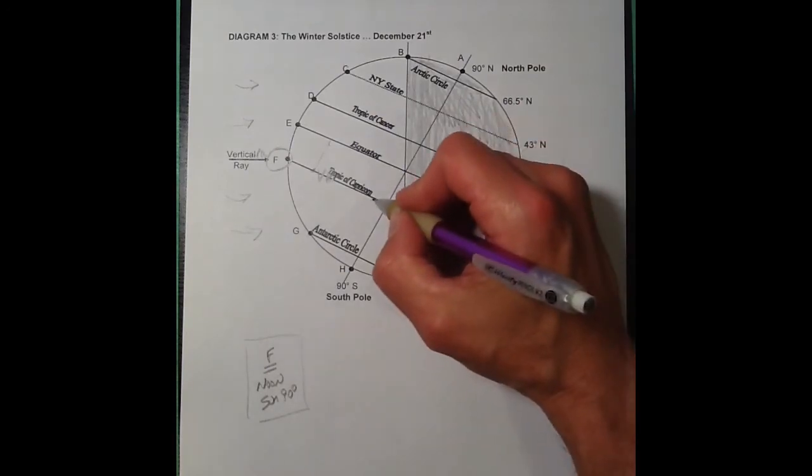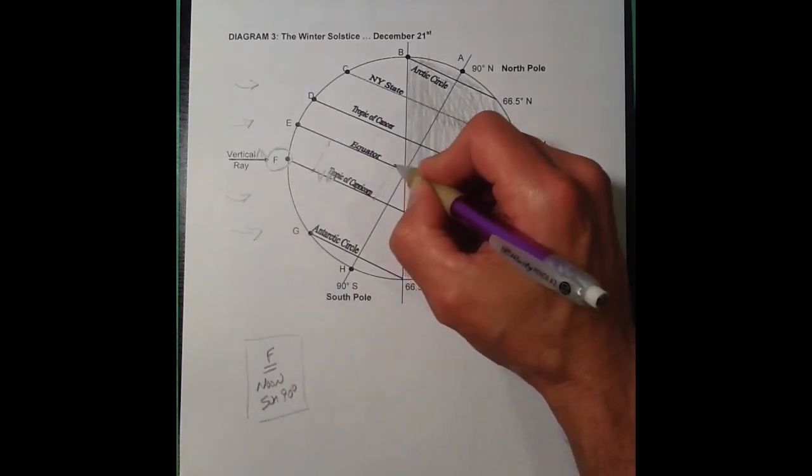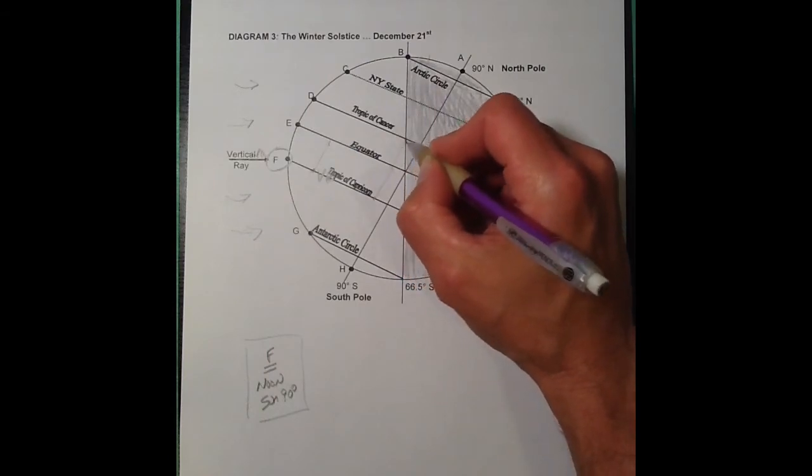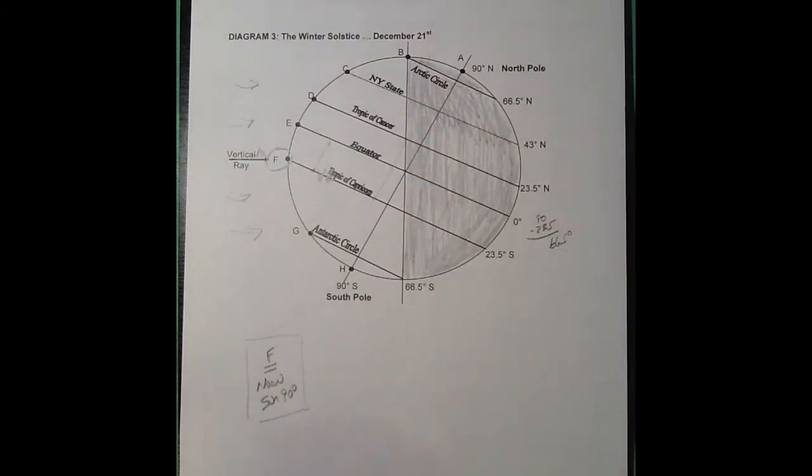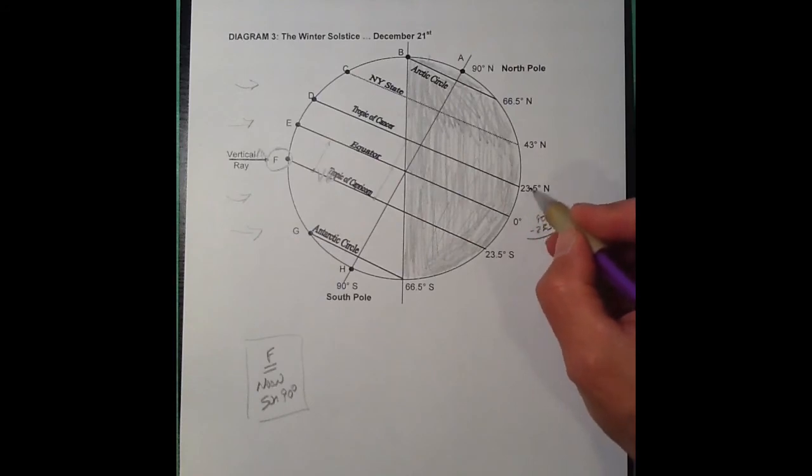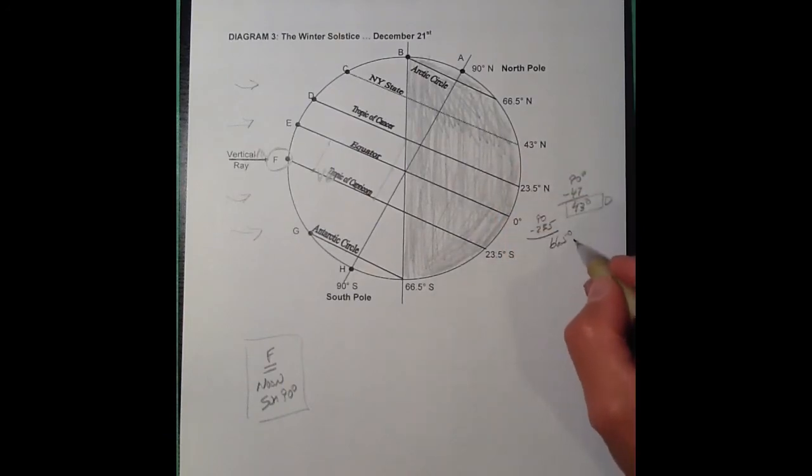You're starting at the Tropic of Capricorn. You go 23.5 plus 23.5, so you've moved 47 degrees up from the vertical ray. The noon sun is going to be 90 minus 47, which would be 43 degrees, and that's for point D, which is on the Tropic of Cancer. 66 would be point E, which is the equator.